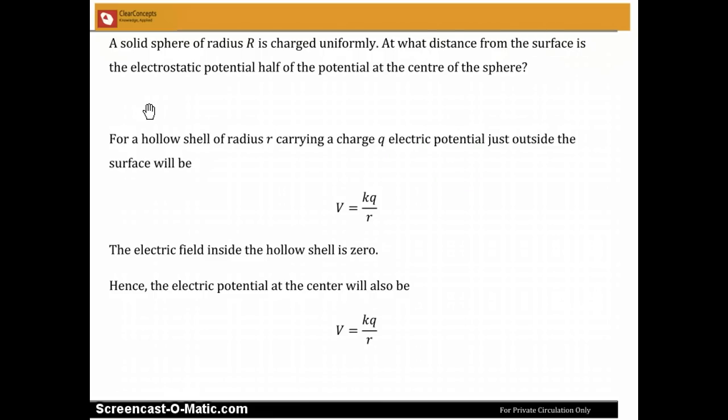So now let's step back and say for a hollow shell of radius small r which carries a charge q, the electric potential just outside the surface will be V equals kq by r. And we get this using the shell theorem. Just outside the surface of this hollow shell, the entire charge behaves as though it were at the center.